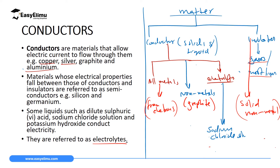There are also substances whose electrical conductivity lies between that of conductors and insulators, meaning they only conduct electricity to some extent. If you increase the temperature of these substances, their electrical conductivity also increases. Materials whose electrical conductivity lies between that of metals and non-metals are called semiconductors. Examples are silicon and germanium. We will discuss them in a full topic in Form 4, where we will see how we can make these semiconductors conduct electricity just like other metals.